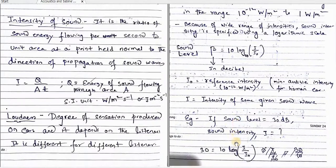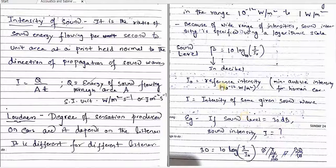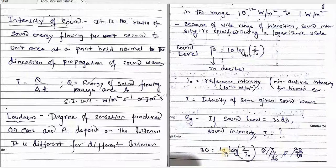For example, if I have a sound level beta of 30 decibel, what will be the sound intensity? If you put 30 here, 30 is equal to 10 log I by I0.